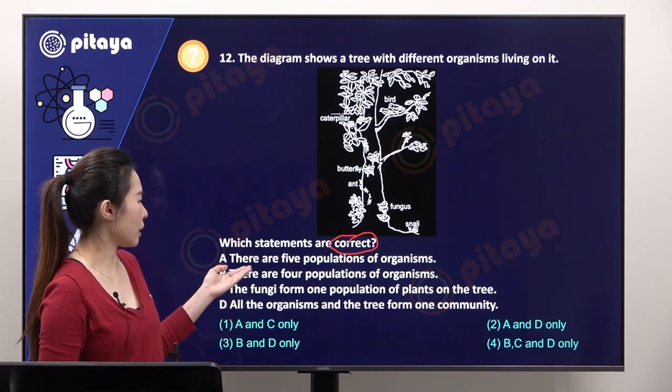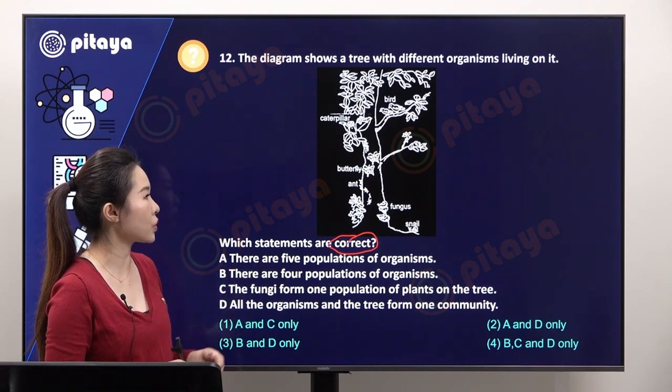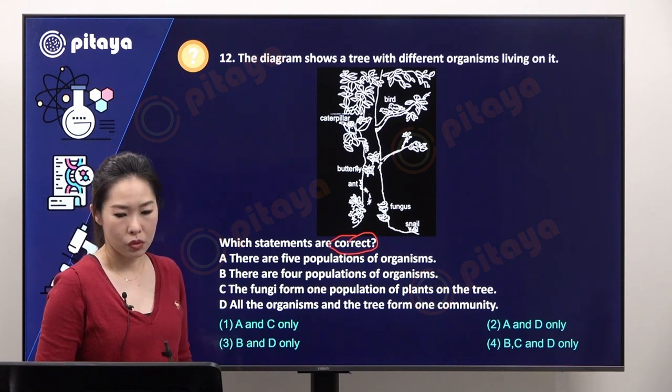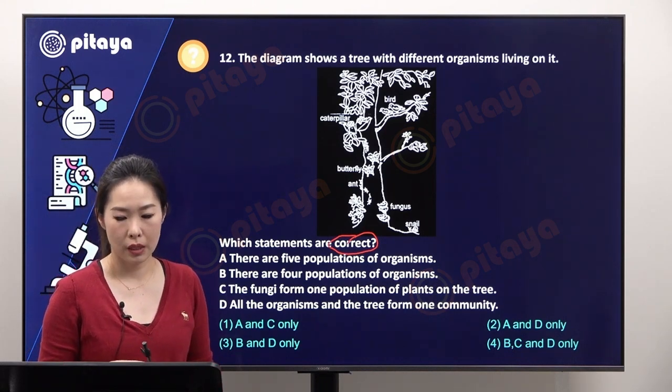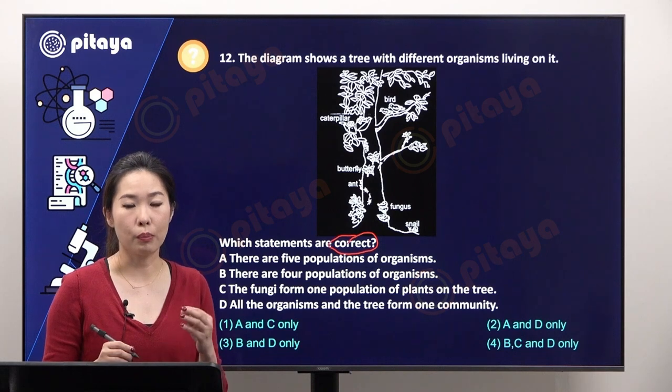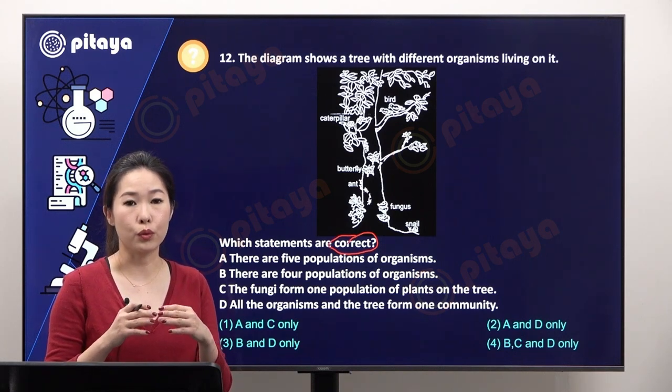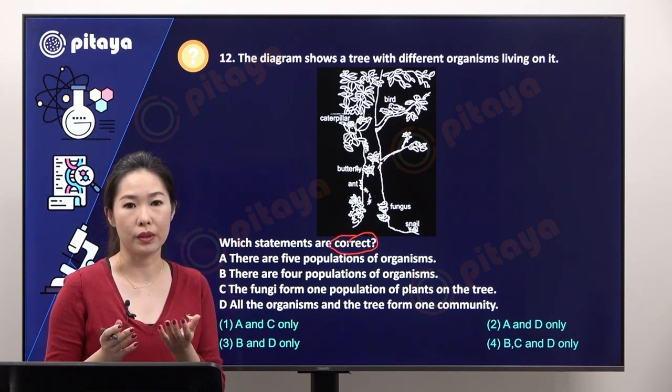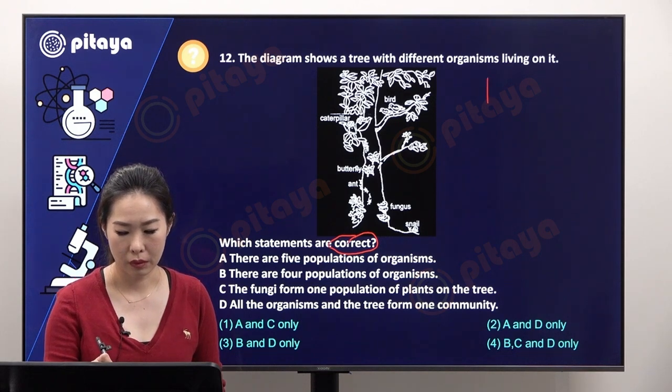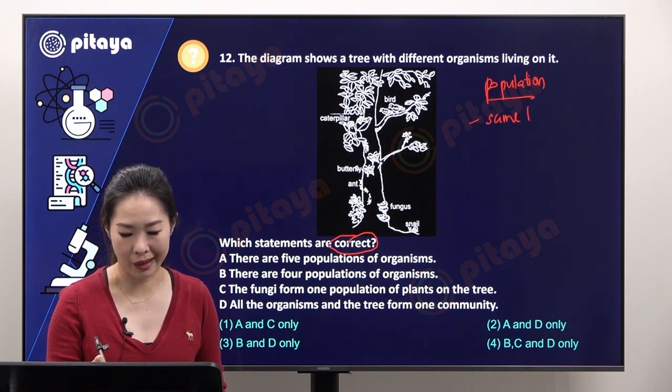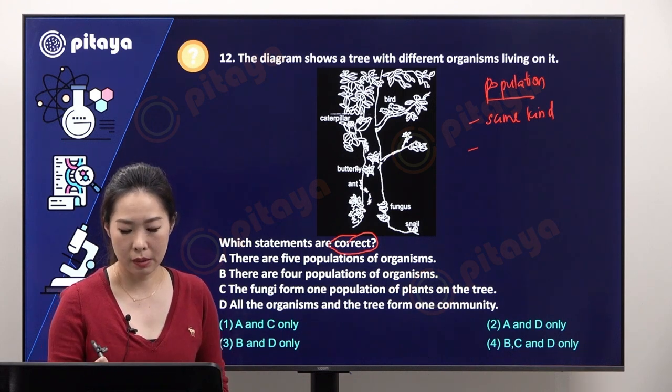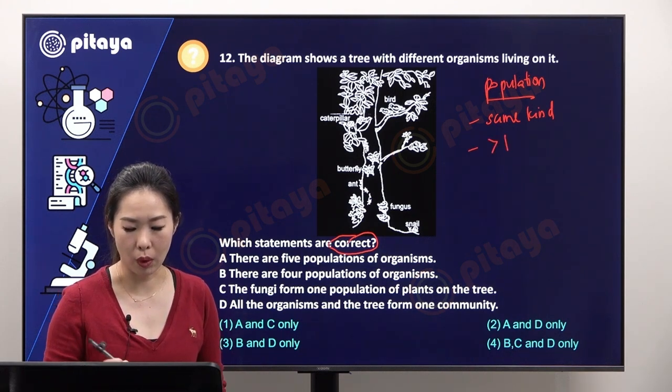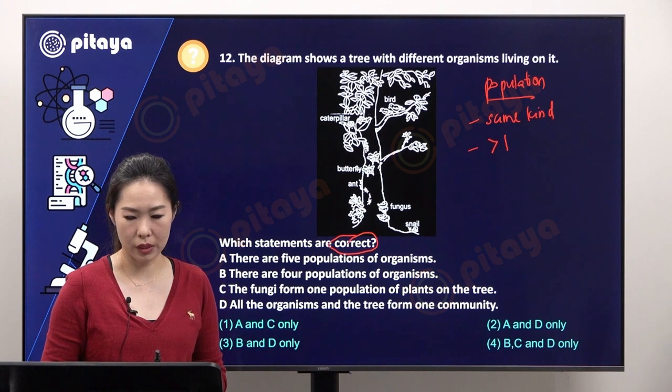Option A says there are five populations of organisms. We can identify and count first. We have to recall that population is made up of a group of organisms of the same type. Keywords to define population: must be of the same kind, same species or same type of organism. At the same time, we should have more than one.